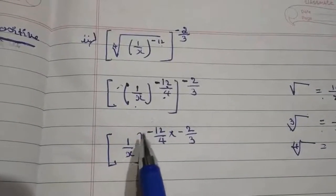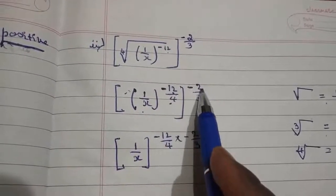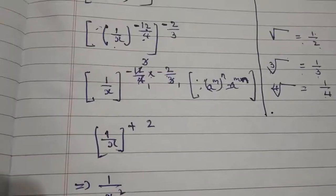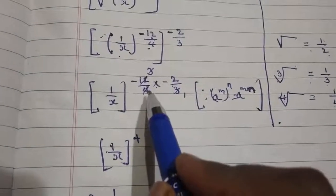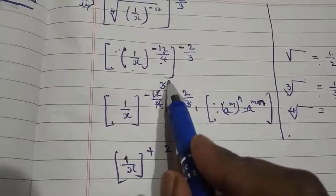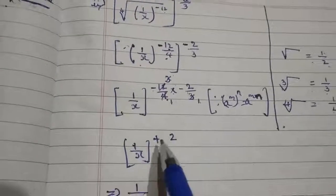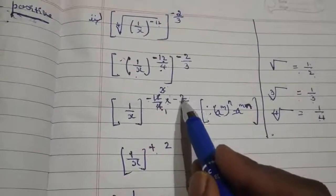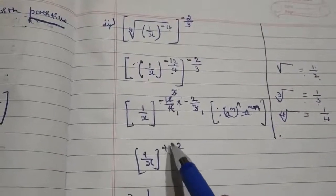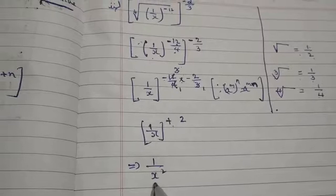By applying the law of exponents — a to the power of m to the power of n equals a to the power of m into n — we multiply the powers. The negatives multiply to give a positive power of 2. Since the power is positive, it can be written as 1 by x square.